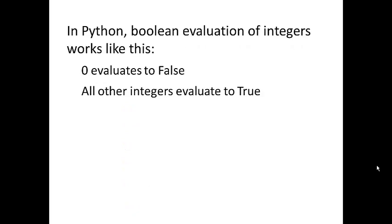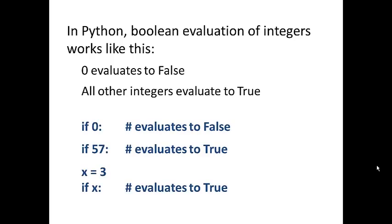In Python, Boolean evaluation of integers works like this. Zero evaluates to false. Every other integer evaluates to true. So negative one evaluates to true. A million evaluates to true. Zero evaluates to false. So if zero, the do something is never going to happen, because zero returns false. If 57, 57 evaluates to true because it's a non-zero integer.